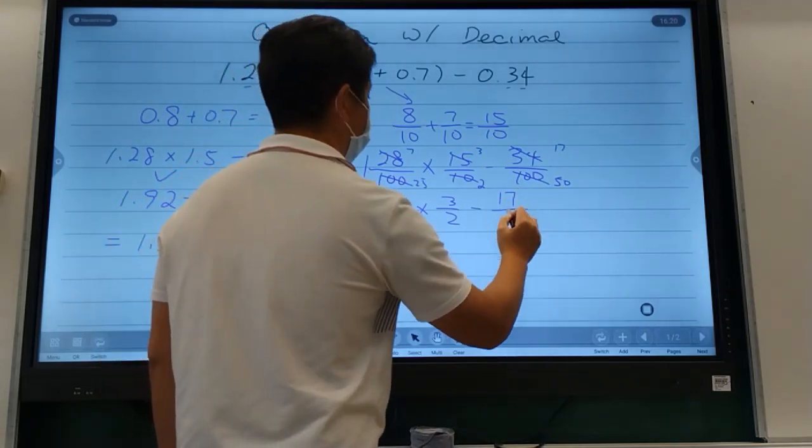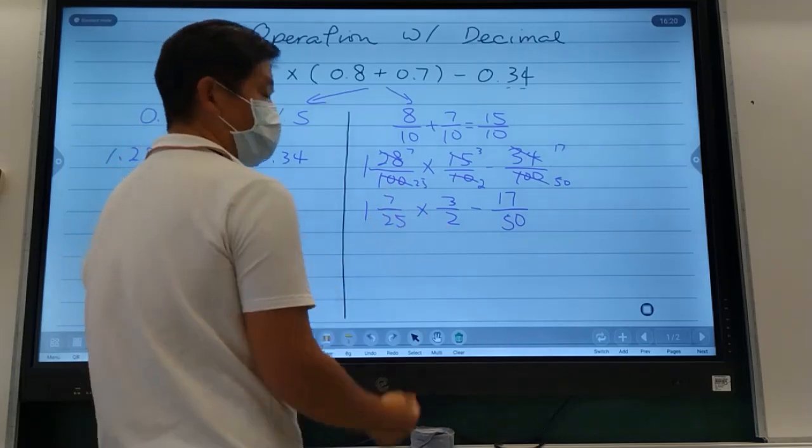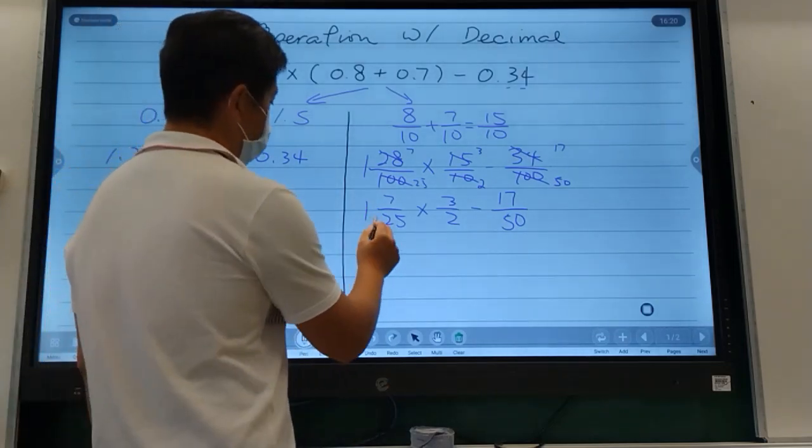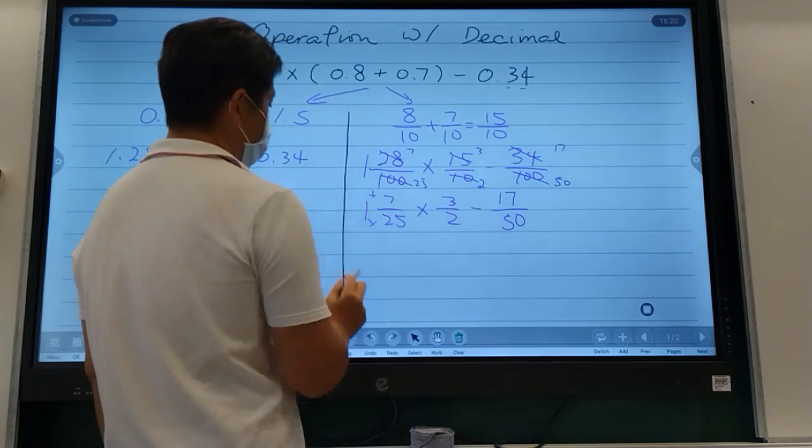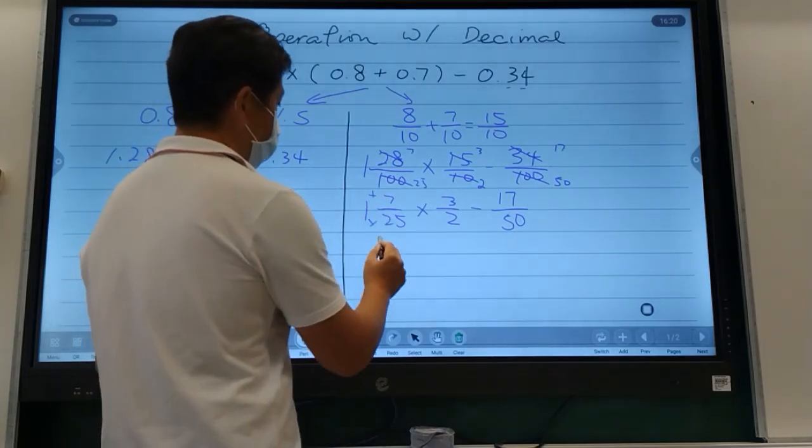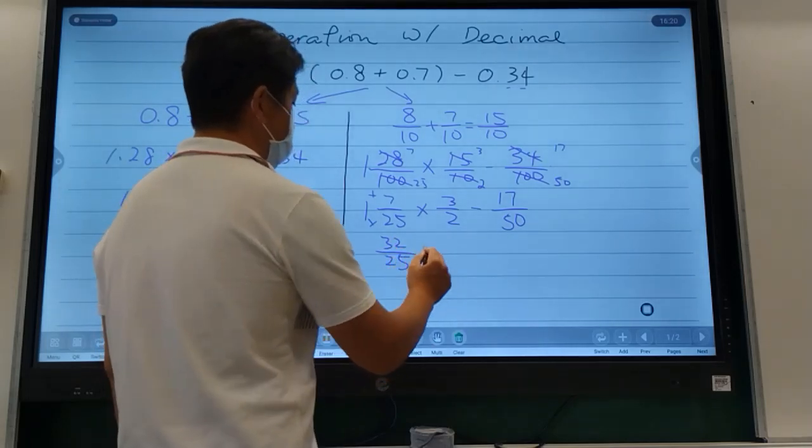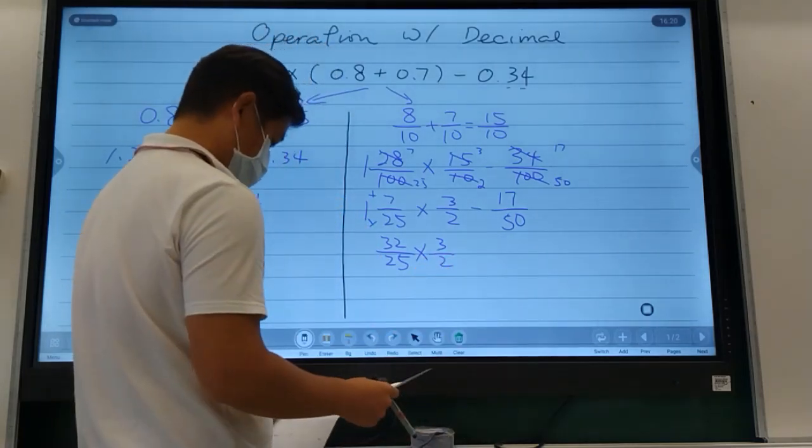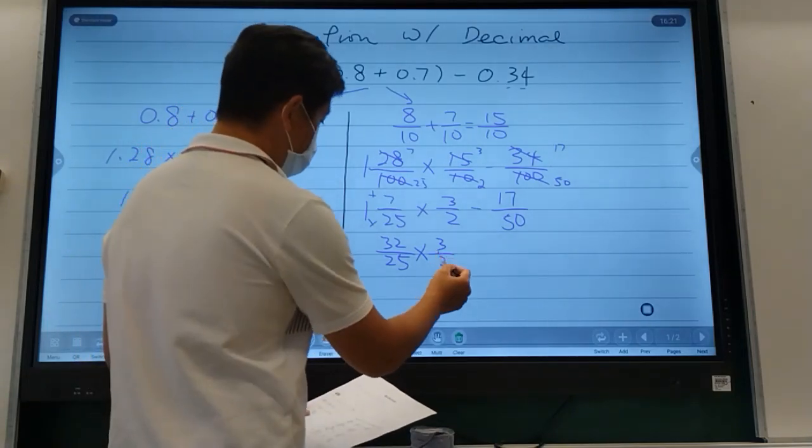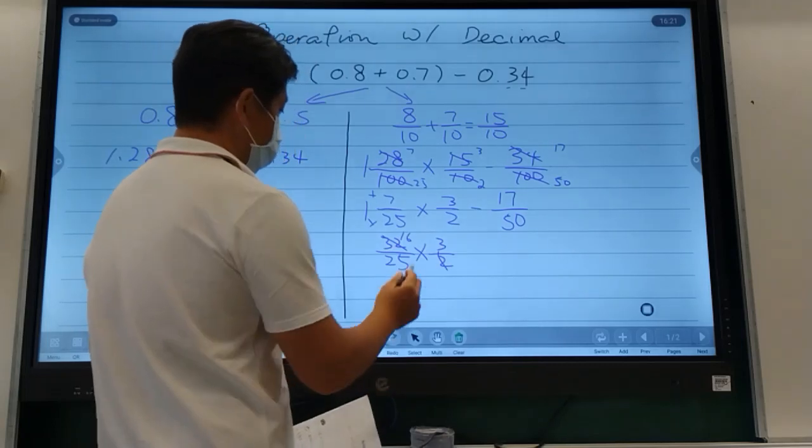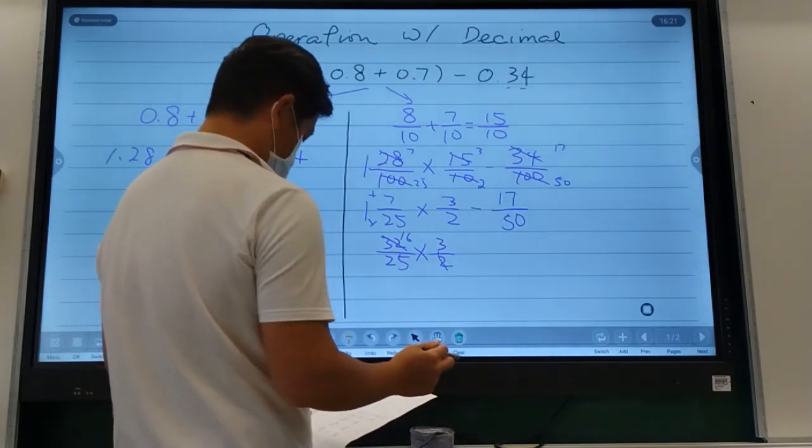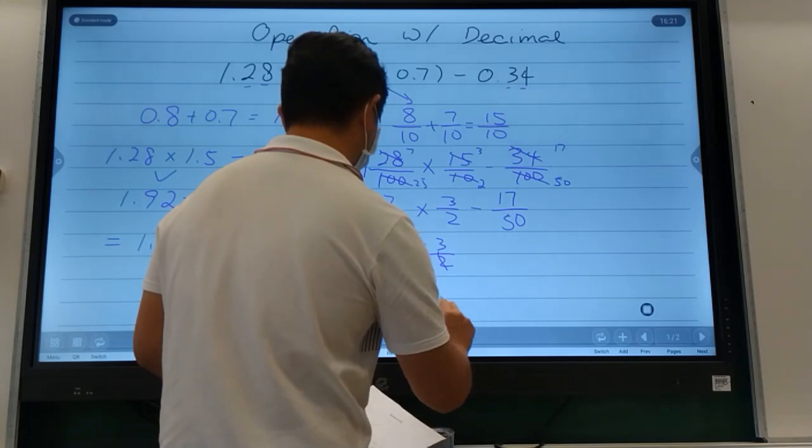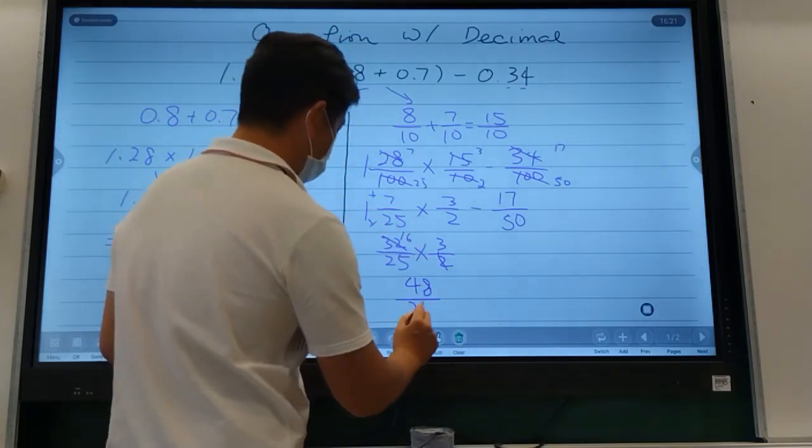Before you multiply your fractions, you must change that mixed number into an improper fraction. So 25 times 1 plus 7, I should have 32 over 25, and then I'm going to multiply by 3 over 2. That becomes 16 times 3, which equals 48 over 25.